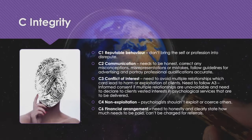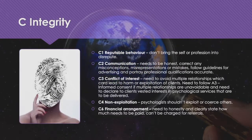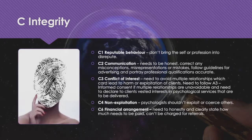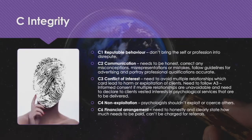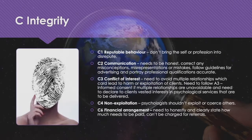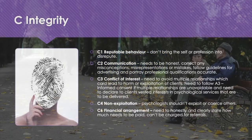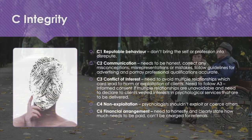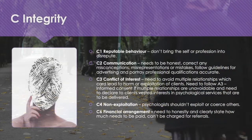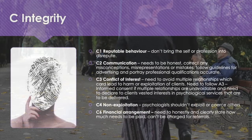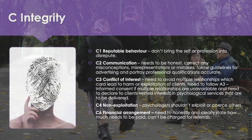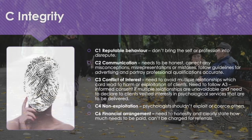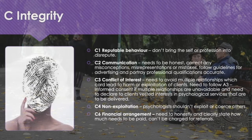C1 is Reputable Behaviour — don't bring yourself or the profession into disrepute. C2 is Communication — communication needs to be honest, correcting for any misconceptions, misrepresentations, or mistakes. One must follow guidelines for advertising and portray professional qualifications accurately. C3 is Conflict of Interests — one needs to avoid multiple relationships, which can lead to harm or exploitation of clients. Individuals need to follow free or informed consent if multiple relationships are unavoidable, and must declare to clients any vested interests in the psychological services to be delivered.